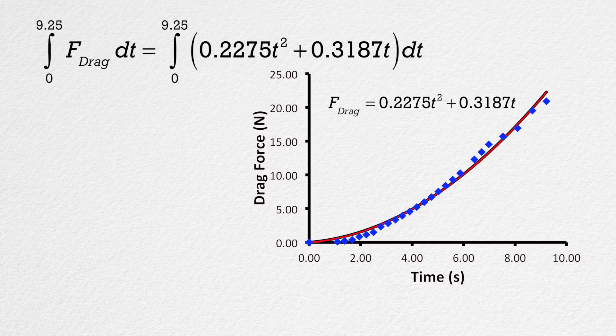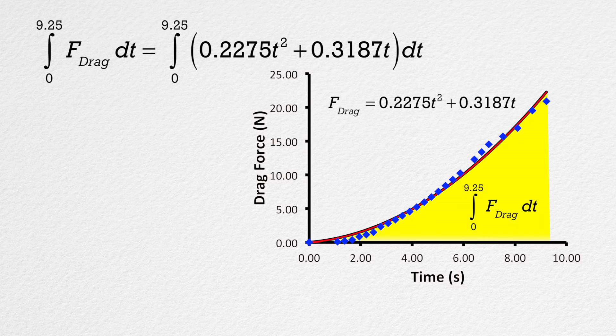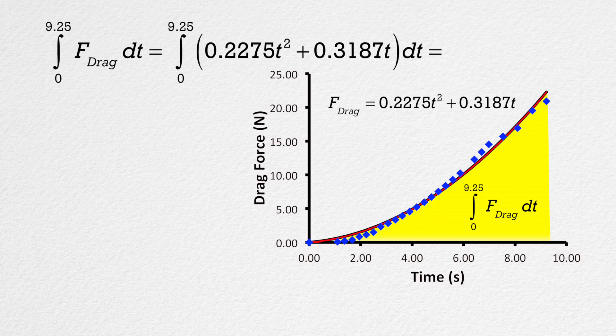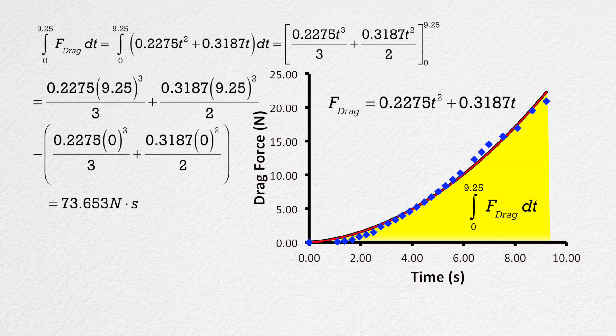If we take the definite integral of the force of drag with respect to time from 0 to 9.25 seconds, which is the total time of the event, we will get the area between the curve and the time axis. The definite integral works out to be 73.653 newton seconds. Again, this is the area between the curve and the time axis.